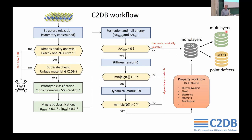We calculate the stiffness tensor and the dynamical matrix, and only if the material is both thermodynamically stable and dynamically stable — meaning it's actually a local minimum, not a saddle point — do we compute its properties and store it in the database. We've also recently created a similar database of bilayer structures and a database of point defects in some of these monolayers. The hope is that eventually this will form a digital platform to explore 2D materials, point defects, and stacked materials within one consistent framework.